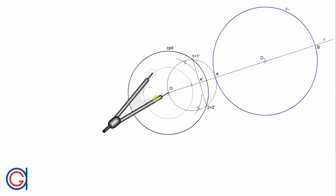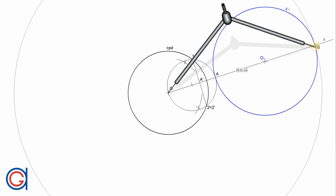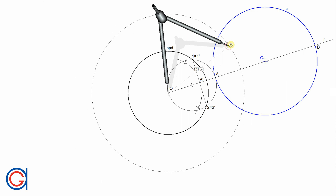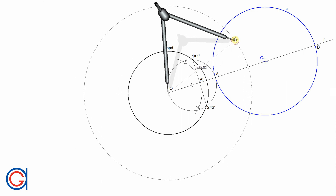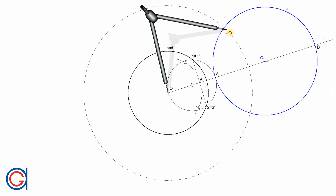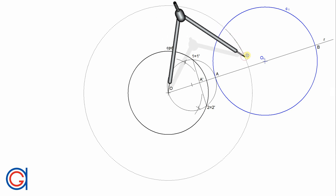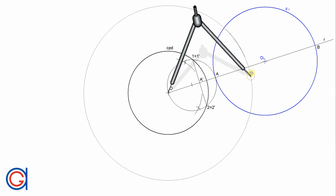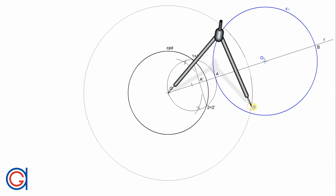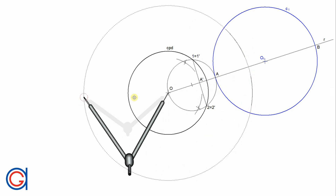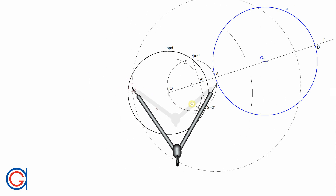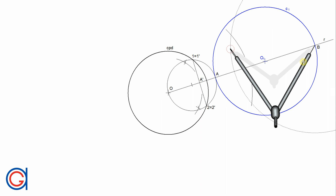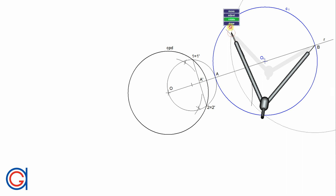Now we are going to repeat the same process with point B to find point B prime. We will work out the perpendicular bisector of the line segment BO. Setting the compass to a radius slightly longer than the line segment BO, we scribe an arc above and below the line. Then with the same radius and the compass set on point B, we scribe two more arcs cutting our previously drawn arcs to form two intersections.